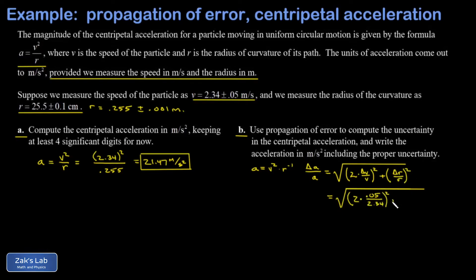When I plug in the numbers, for the first term that's 2 times 0.05 over 2.34 all squared, and in the second term 0.001 over 0.255 all squared. When I run the numbers on this, I get 0.0429.